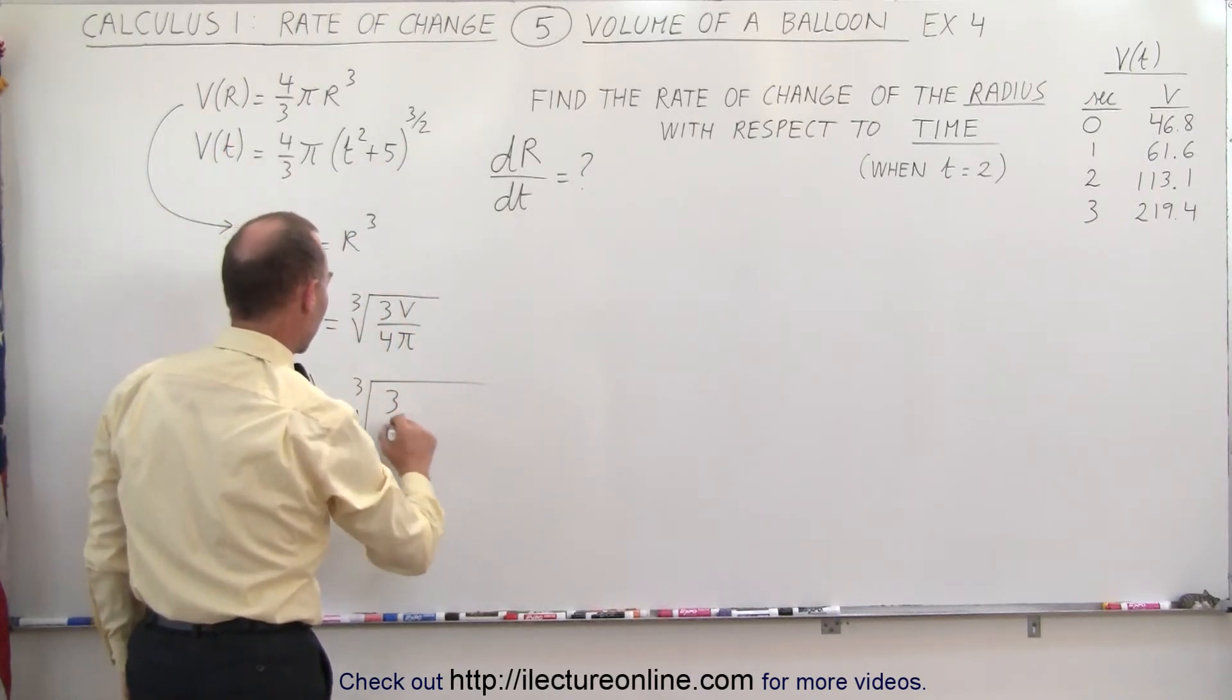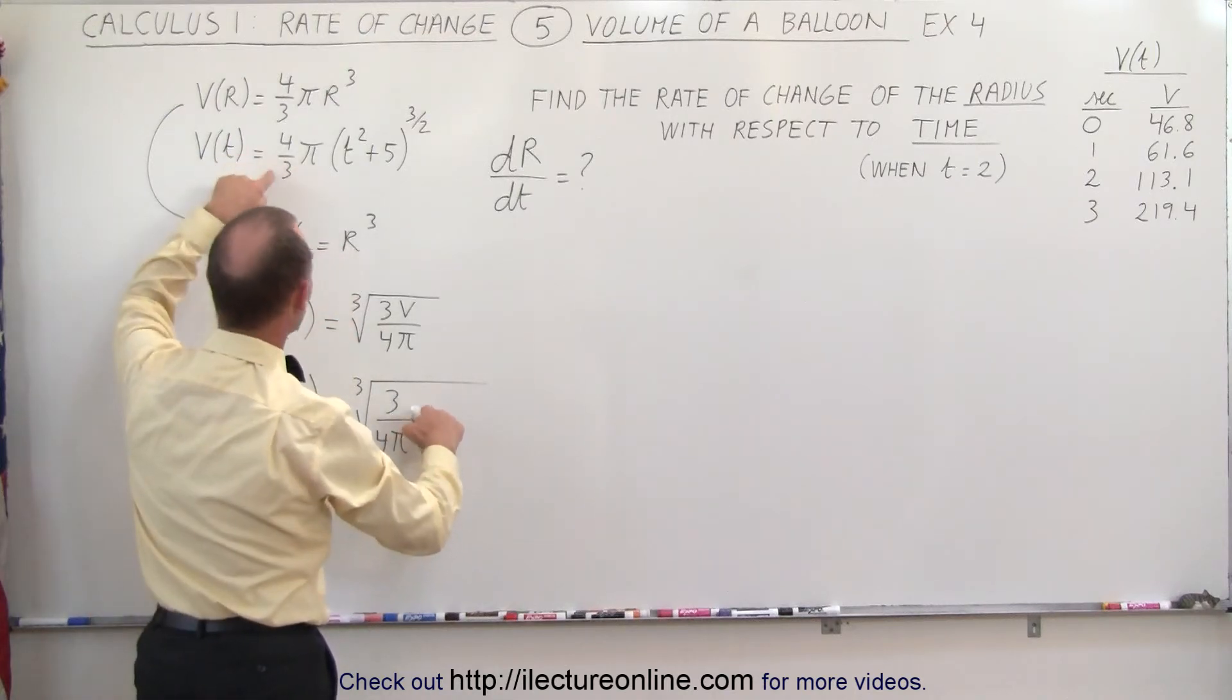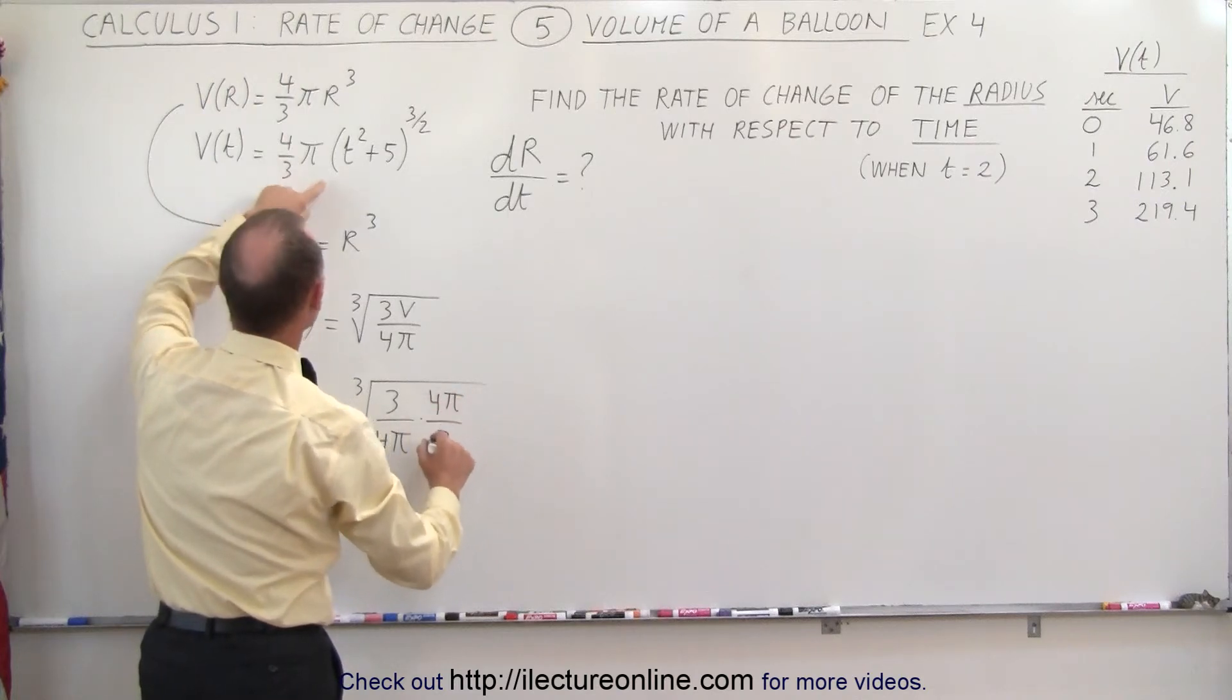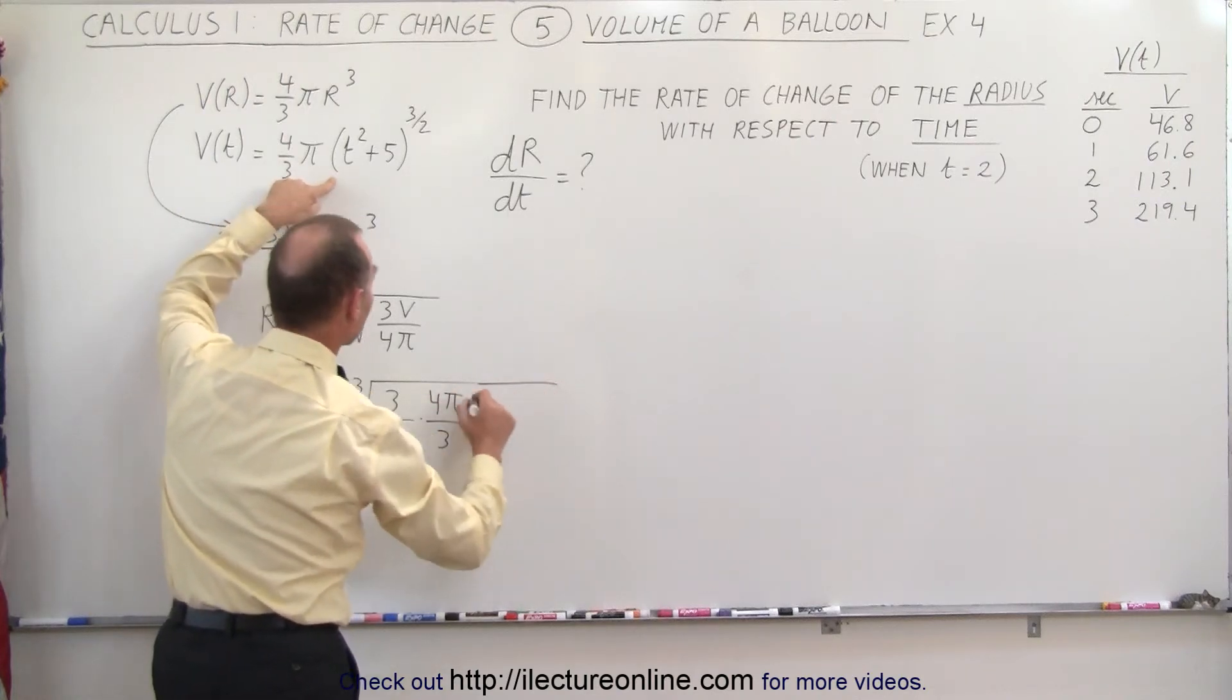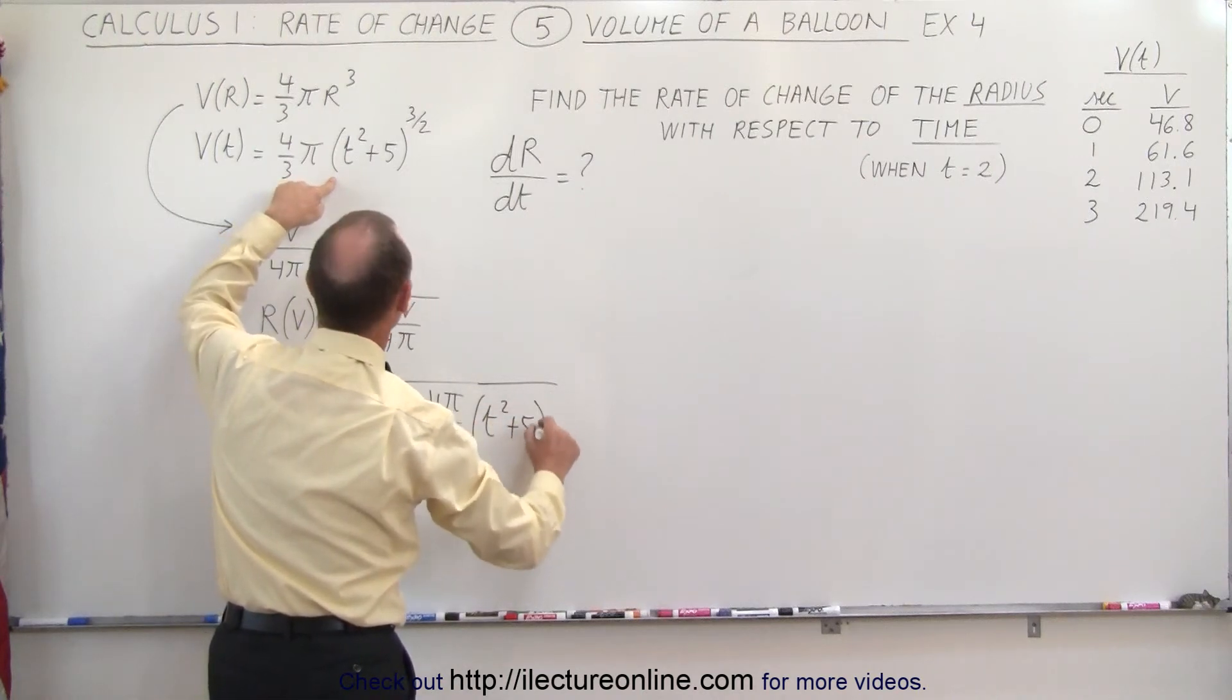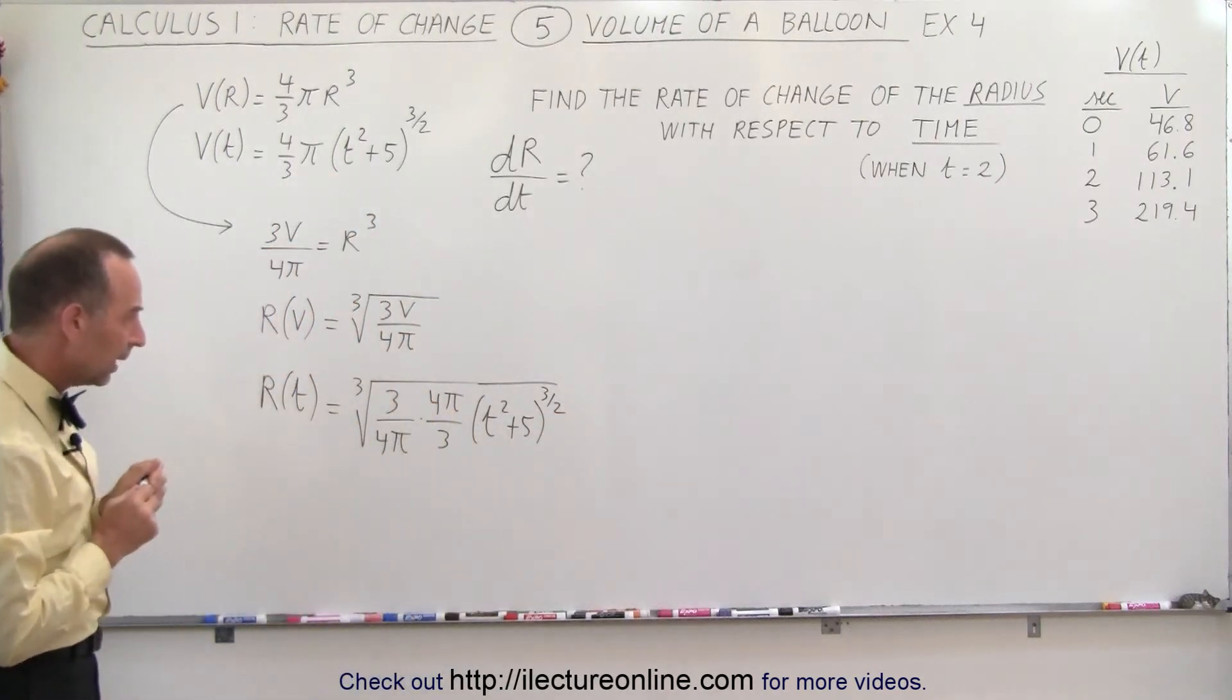well, let me write the 4π down. So we have 3 over 4π, now the volume will be 4π over 3, and then we have this quantity in here, that would be the quantity, t² + 5 to the 3/2 power.